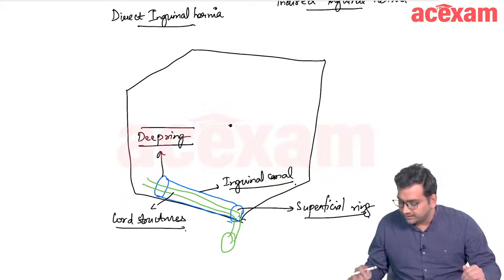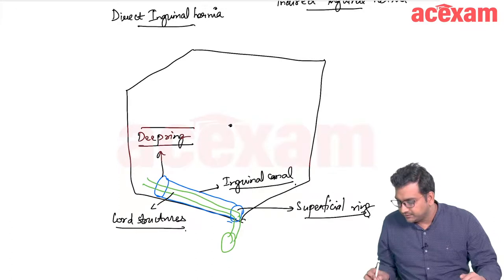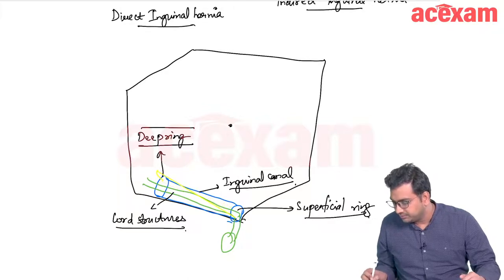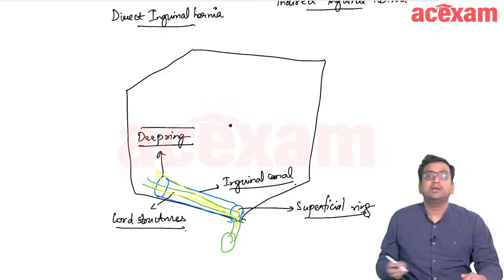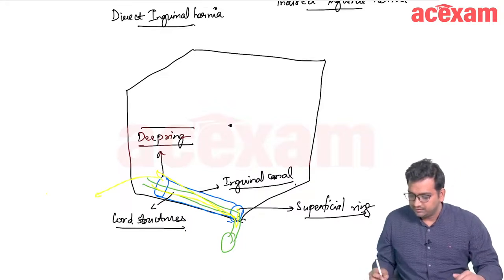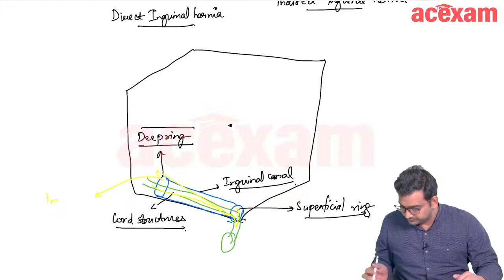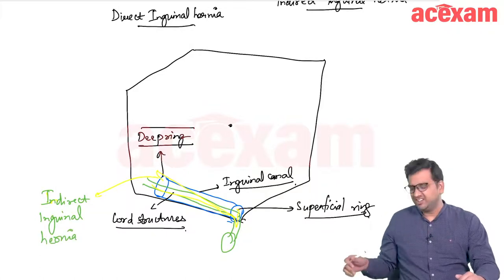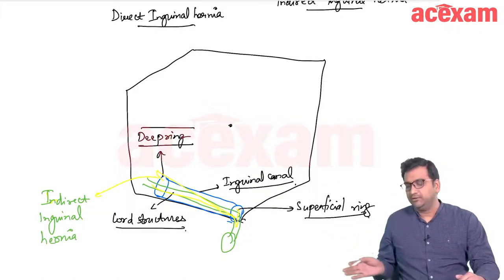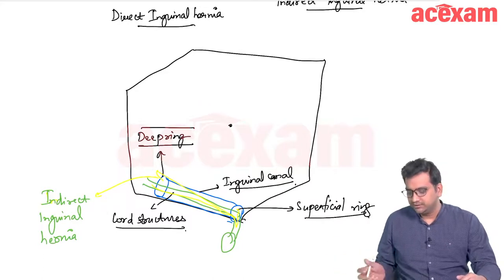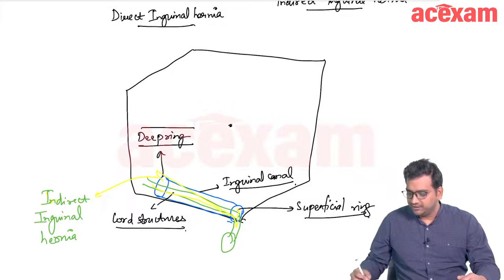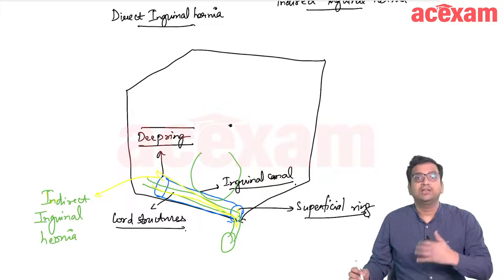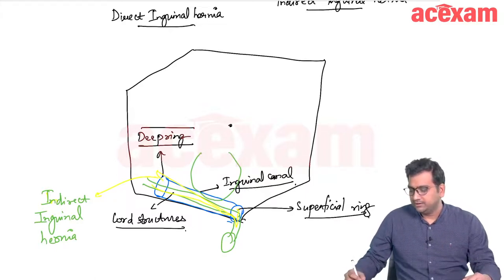Whenever there is a hernia, there is a sac that comes through the deep ring, passes inside the inguinal canal, and exits through the superficial ring. This type of hernia is known as indirect inguinal hernia, because the hernia travels indirectly — coming through the deep ring and going through the inguinal canal externally. Whenever the hernia bulge comes directly through the posterior wall of the inguinal canal, it is a direct hernia.